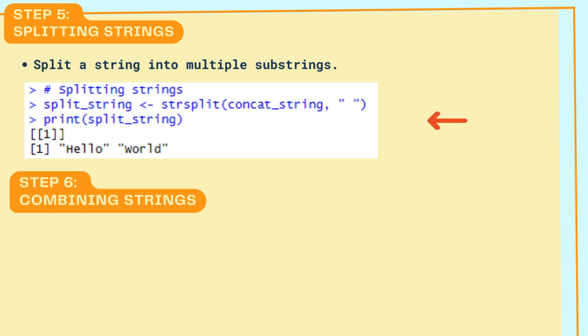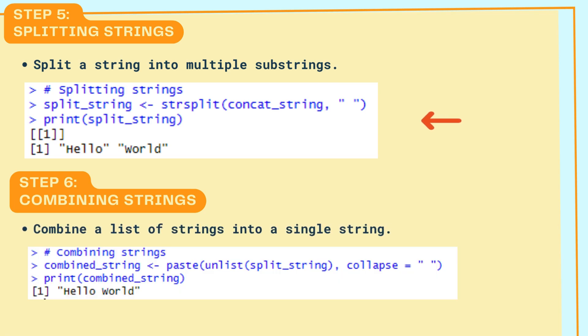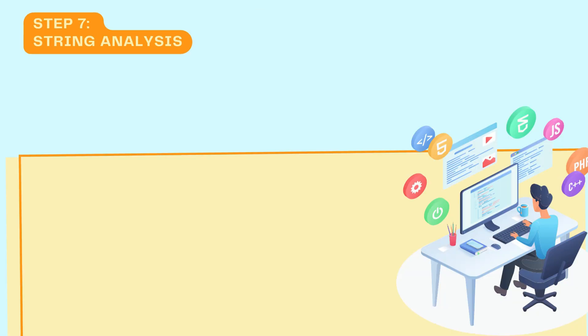Step 6: Combining Strings. Combine a list of strings into a single string. We use the paste function with collapse to combine the list of strings back into a single string.